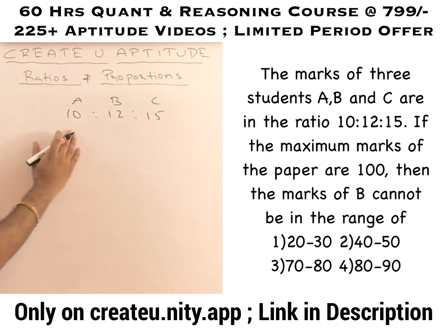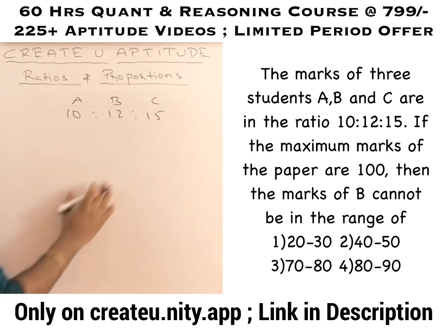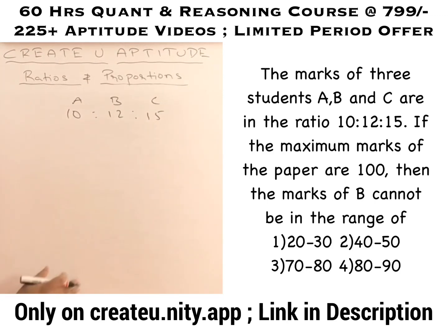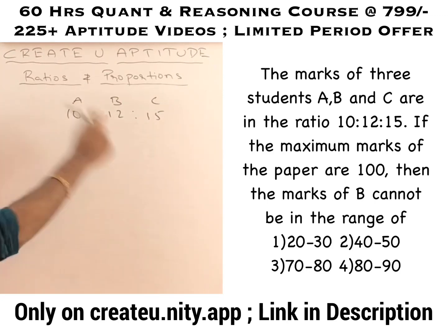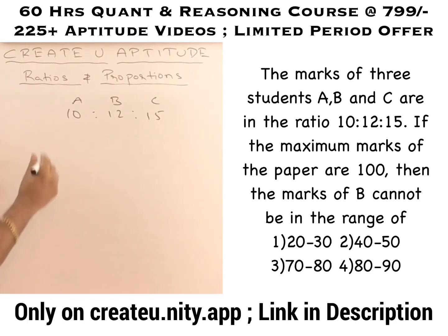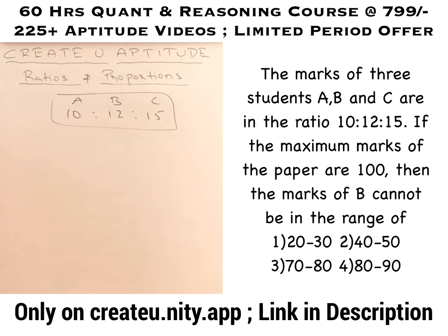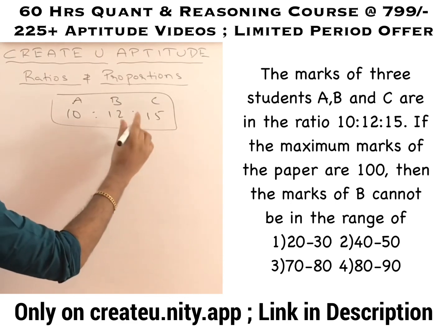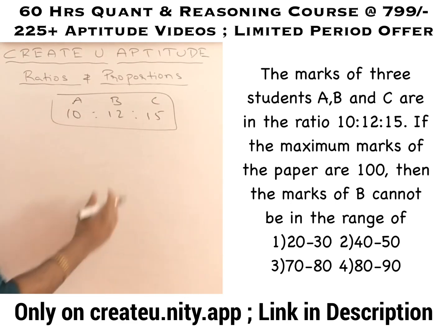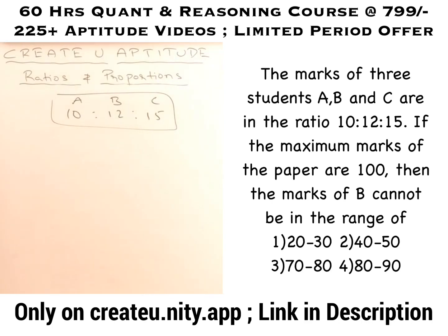A can score 10 marks, 12 marks, 15 marks. They can score double of it, they can score triple of it, but nobody's marks should cross 100. So C can score 15, 30, 45, 60, 75, 90 — but C cannot score 105.